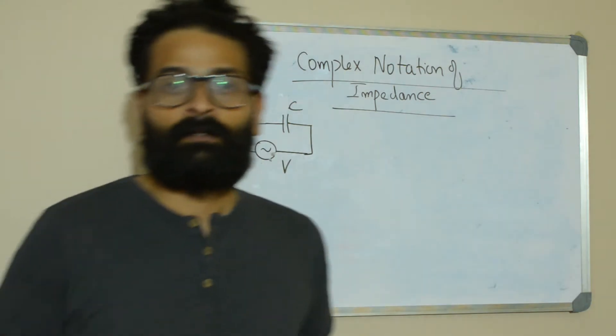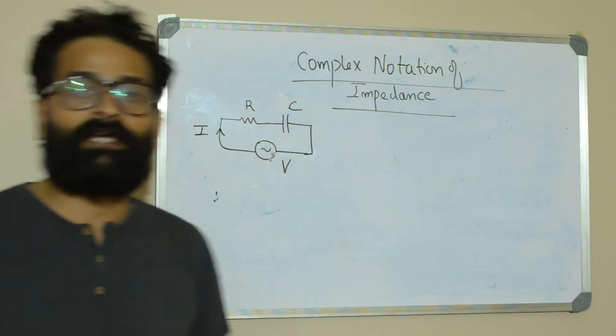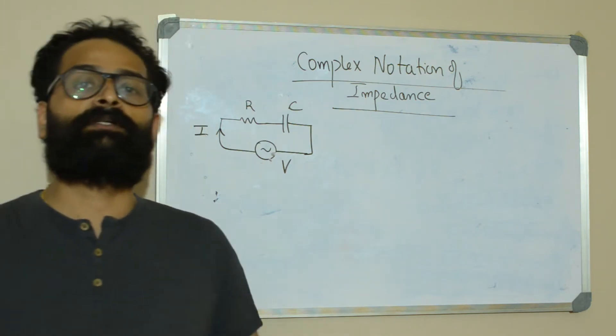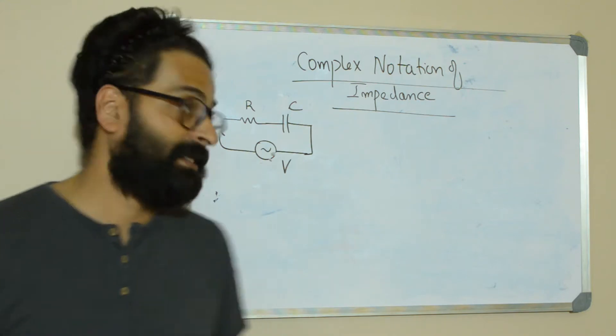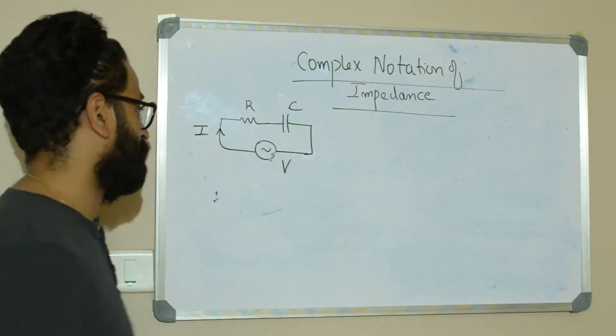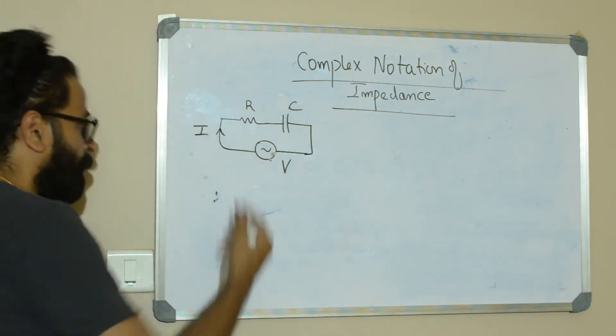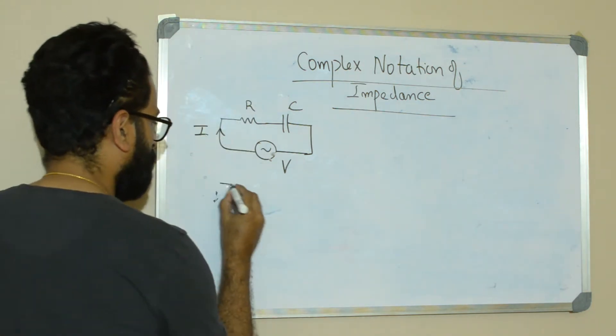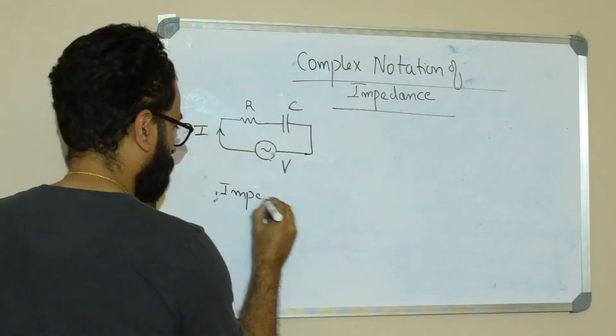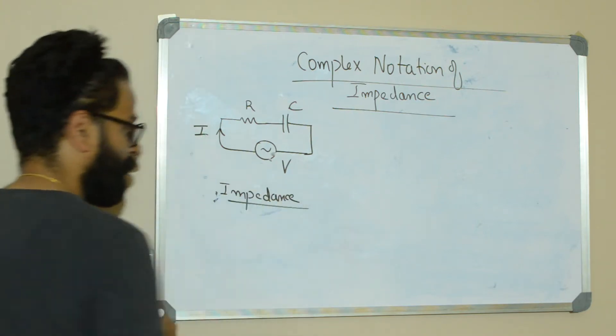Hello, welcome back. Today let's try constructing the complex numbers for RC network and RL network. First, let us consider RC network. I have already done RC network. Now for an RC network, the impedance triangle was drawn something like this.